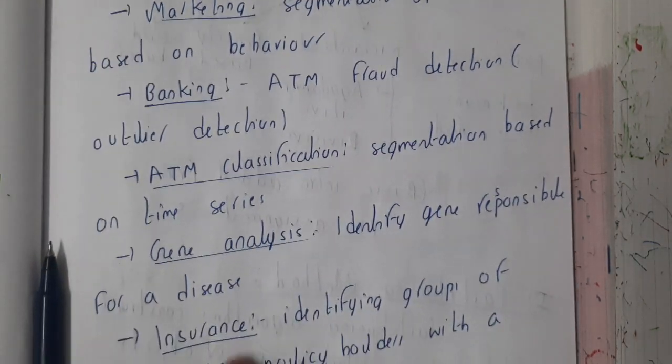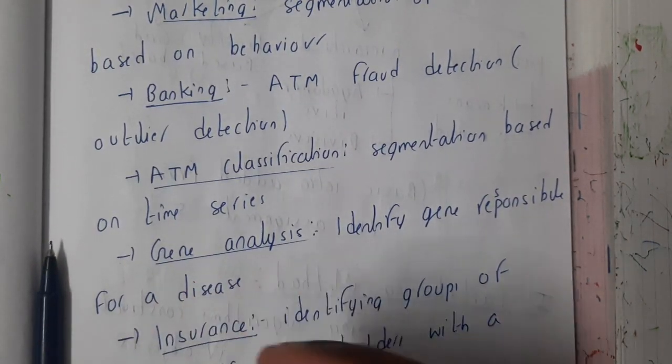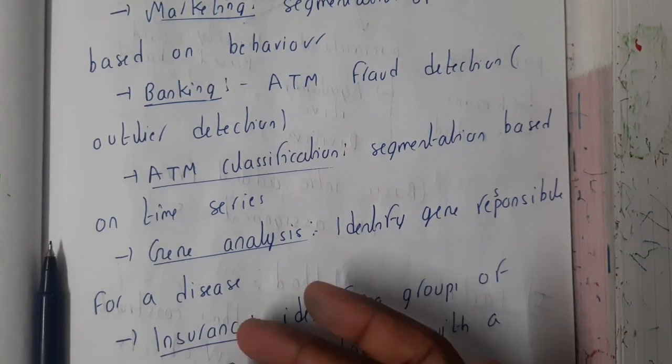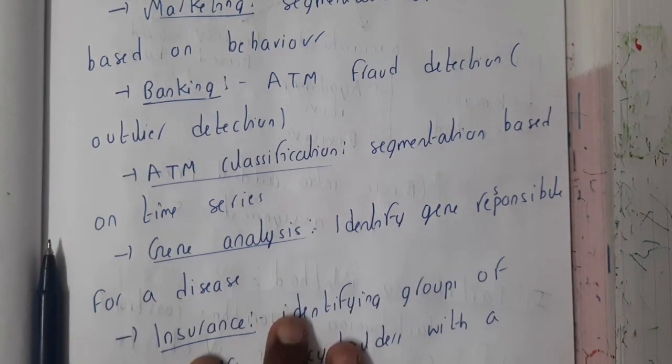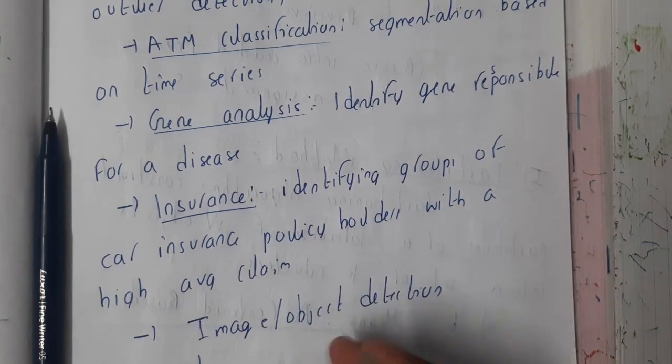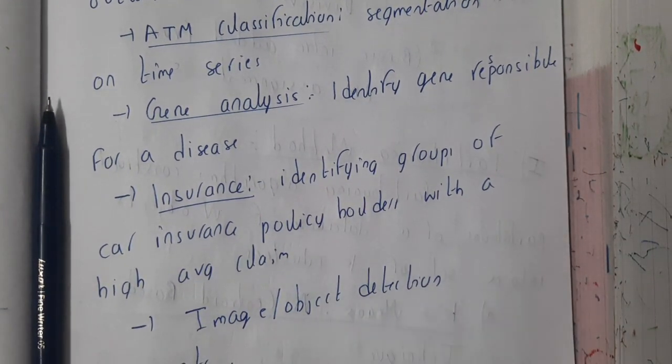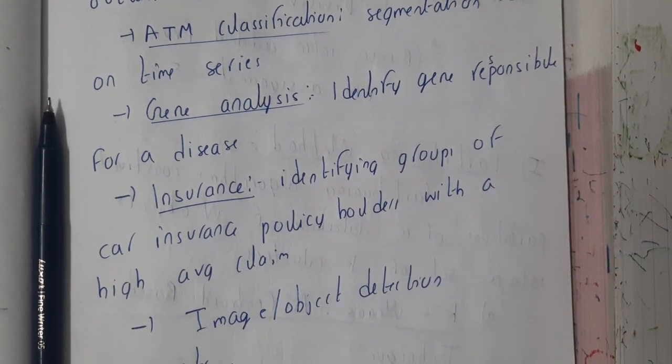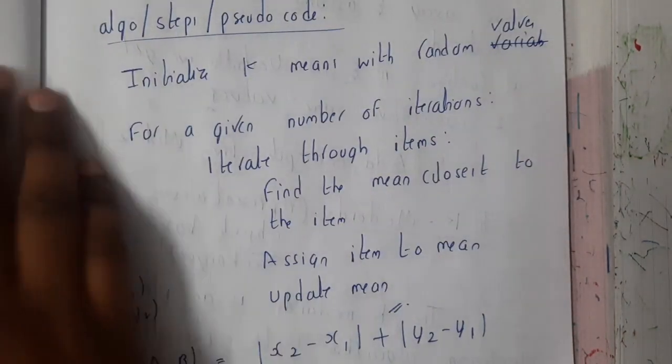Segmentation of how the series of data is coming and everything. Gene analysis like the genes of humans, diseases and all those things we can identify. Similarly insurance, and we are having multiple examples which you can just remember the names and you can write in your examination.